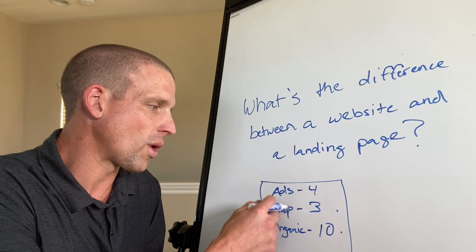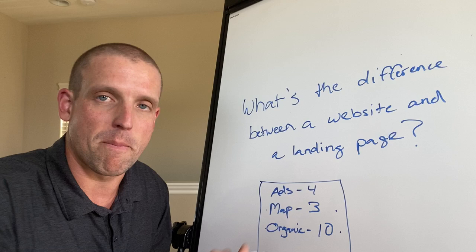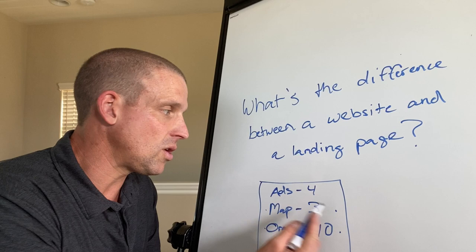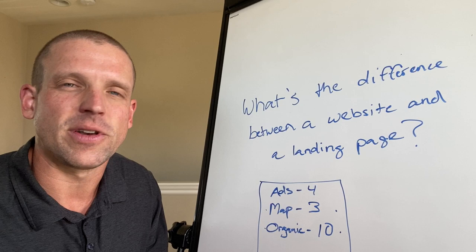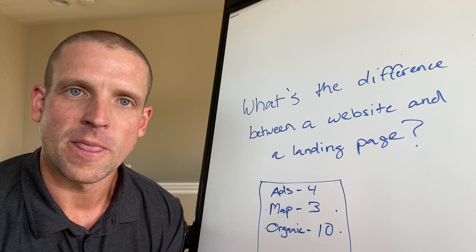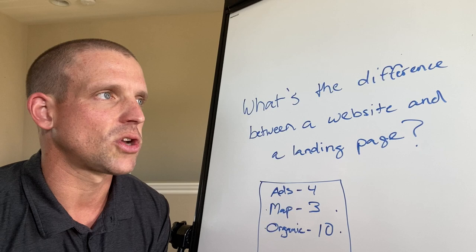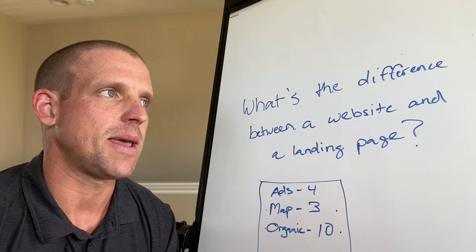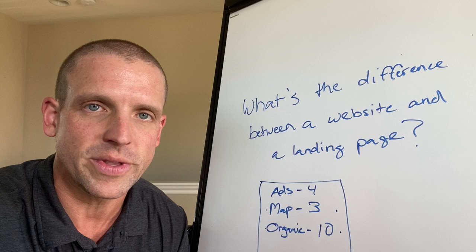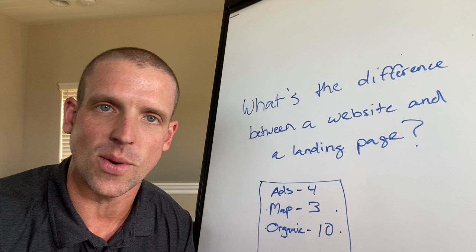It's so that eventually you can rank it organically. And when someone clicks on the link here or in the map, you're not actually paying anything. Now the ads section, we can use a website or a landing page. Technically, the definition of a landing page is any page you land on after you click on a link. But how a lot of internet marketers use landing pages is they use services like ClickFunnels or Unbounce or Leadpages. And it makes it very easy to set up a page.